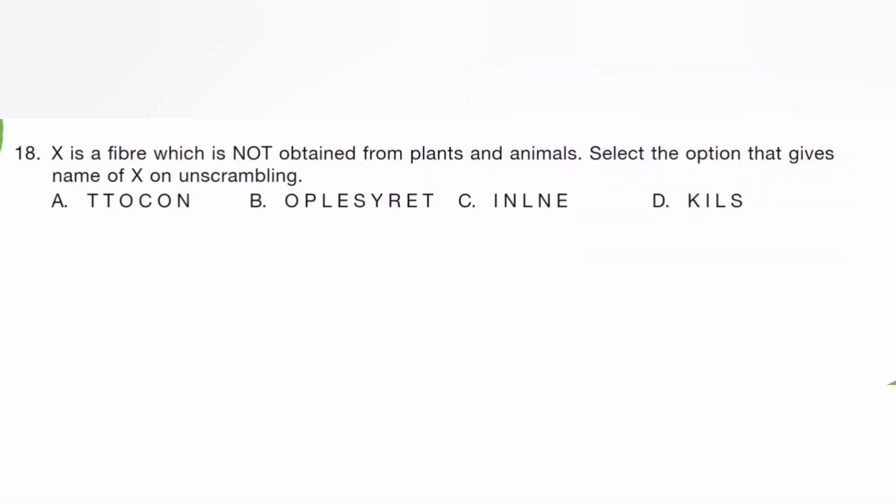X is the fiber which is not obtained from plant and animal. Select the option that gives the name of X on unscrambling. The answer is B and the word is polyester.